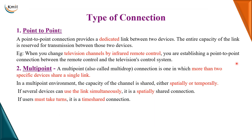Now let us move on to types of connection. Whenever a connection is established in a network, it can be a point-to-point connection or a multipoint connection. A point-to-point connection is a dedicated link between two devices, where the entire capacity of that link is used only by those two devices. A good example is using a TV remote with infrared ray — providing a point-to-point connection between the TV remote and the TV set.